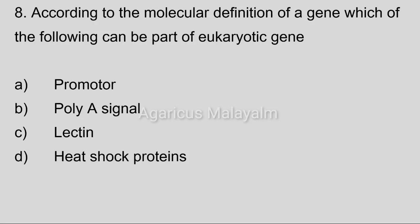Eighth question: According to the molecular definition of a gene, which of the following can be part of a eukaryotic gene? Answer options. Option A: Promoter. Option B: Poly-A signal. Option C: Lecithin. Option D: Heat shock protein. Correct answer: Option A, Promoter.